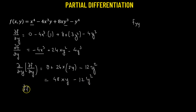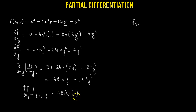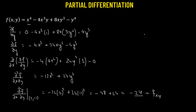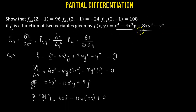Now we obtain the value of the second partial derivative of f with respect to y at (2, -1). Substituting x equals 2 and y equals negative 1: 48 times 2 times negative 1 equals negative 96, minus 12 times negative 1 squared equals minus 12. So we get negative 96 minus 12, which is negative 108. The second partial derivative of f with respect to y at (2, -1) is negative 108. Note that there was a typo in the question showing positive 108, but the correct answer is actually negative 108.